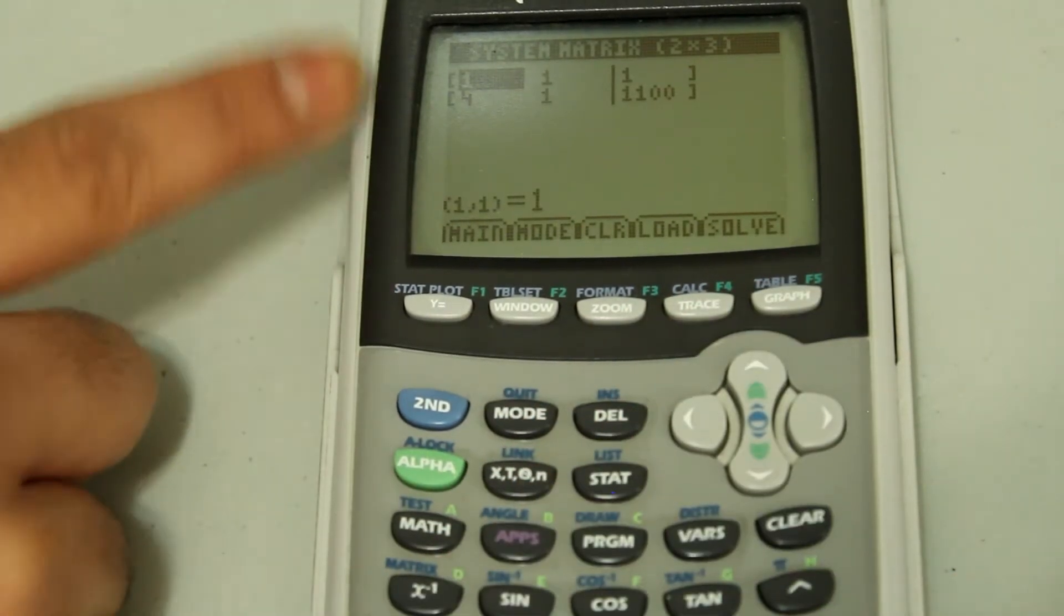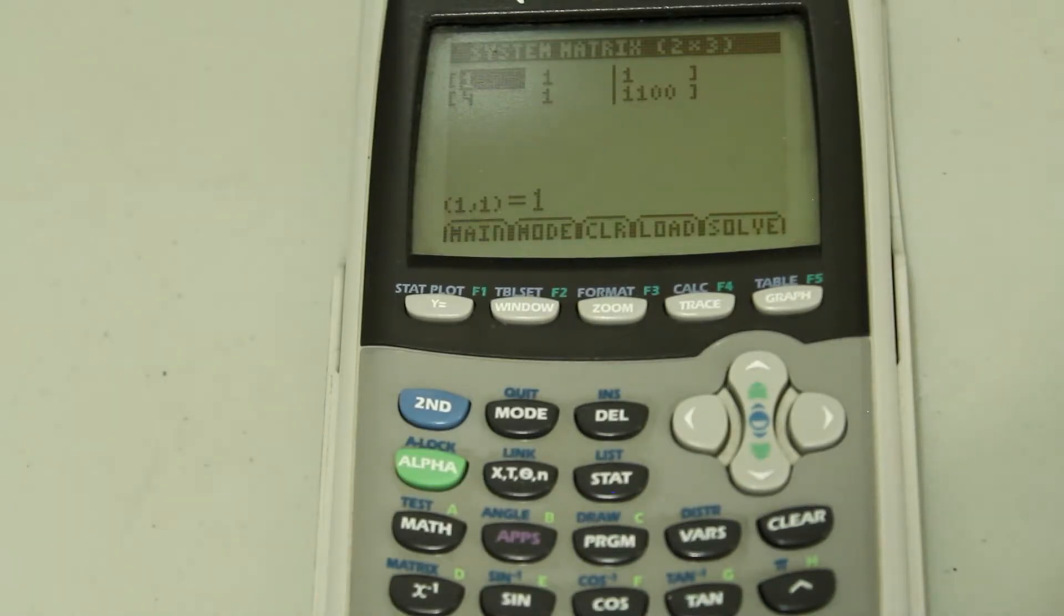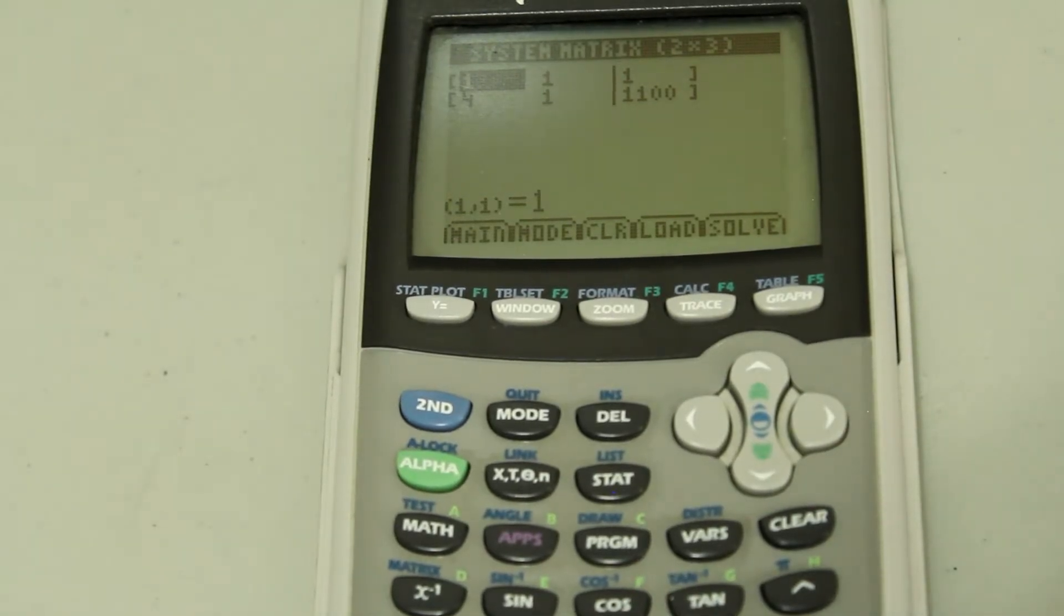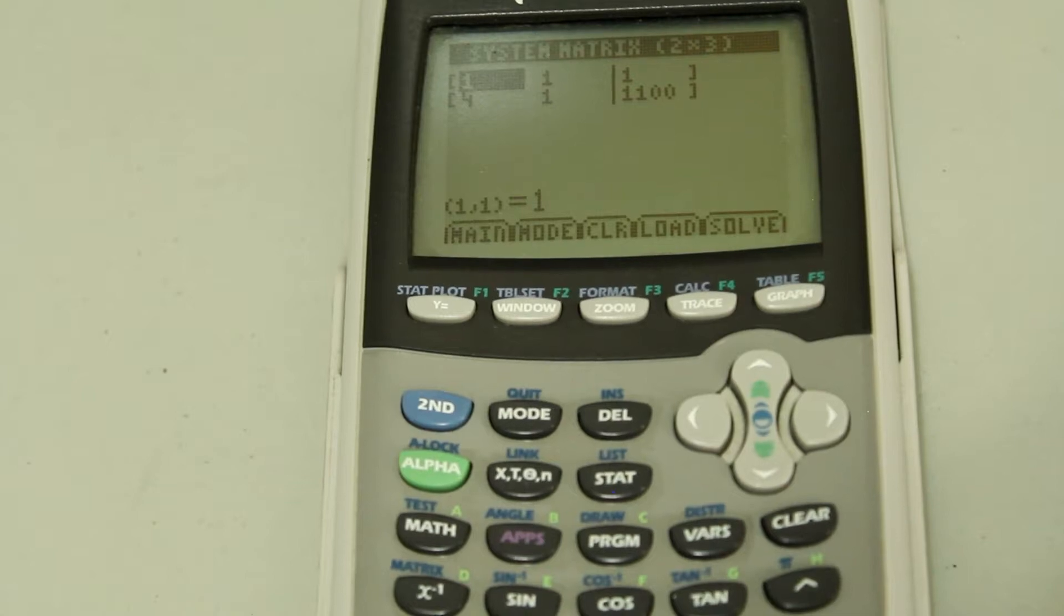And we have something that looks like a matrix. So, in this case, the first number denotes your X coefficient. And the second one is your Y. And the third one is your constant.